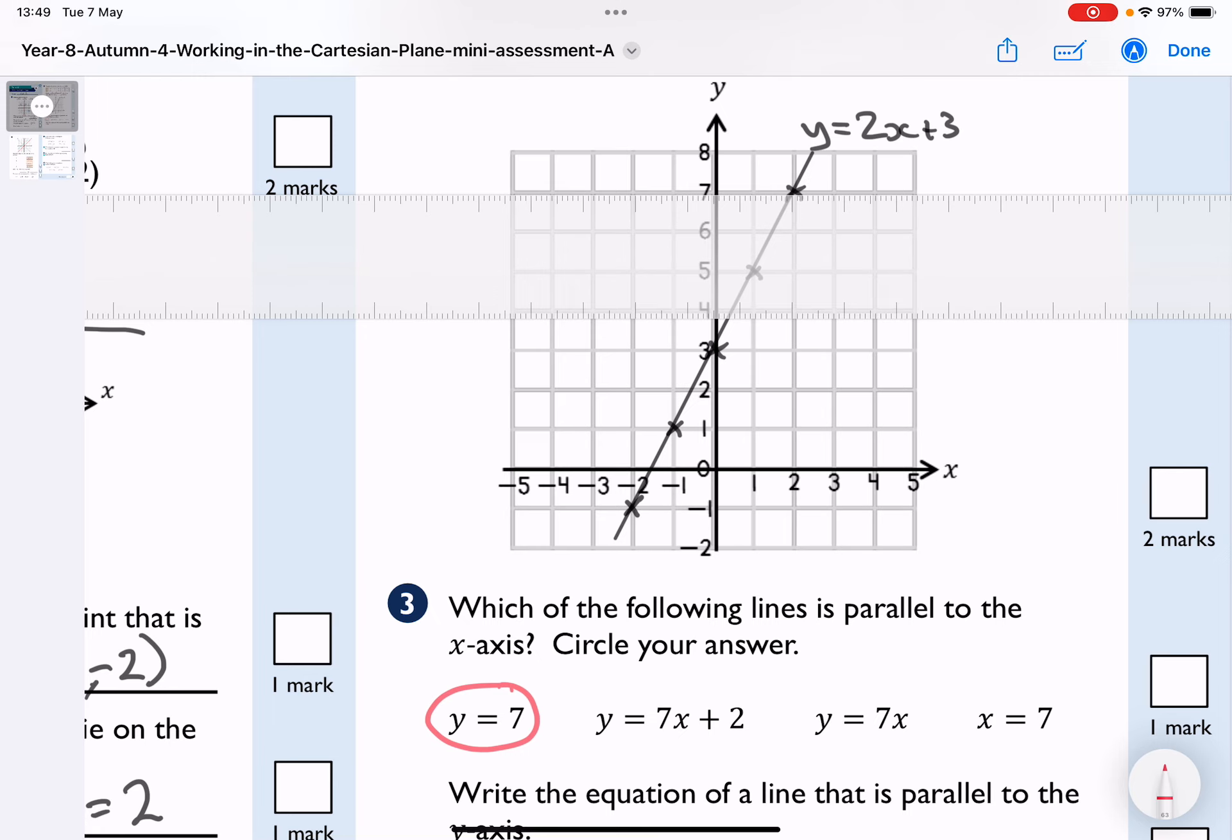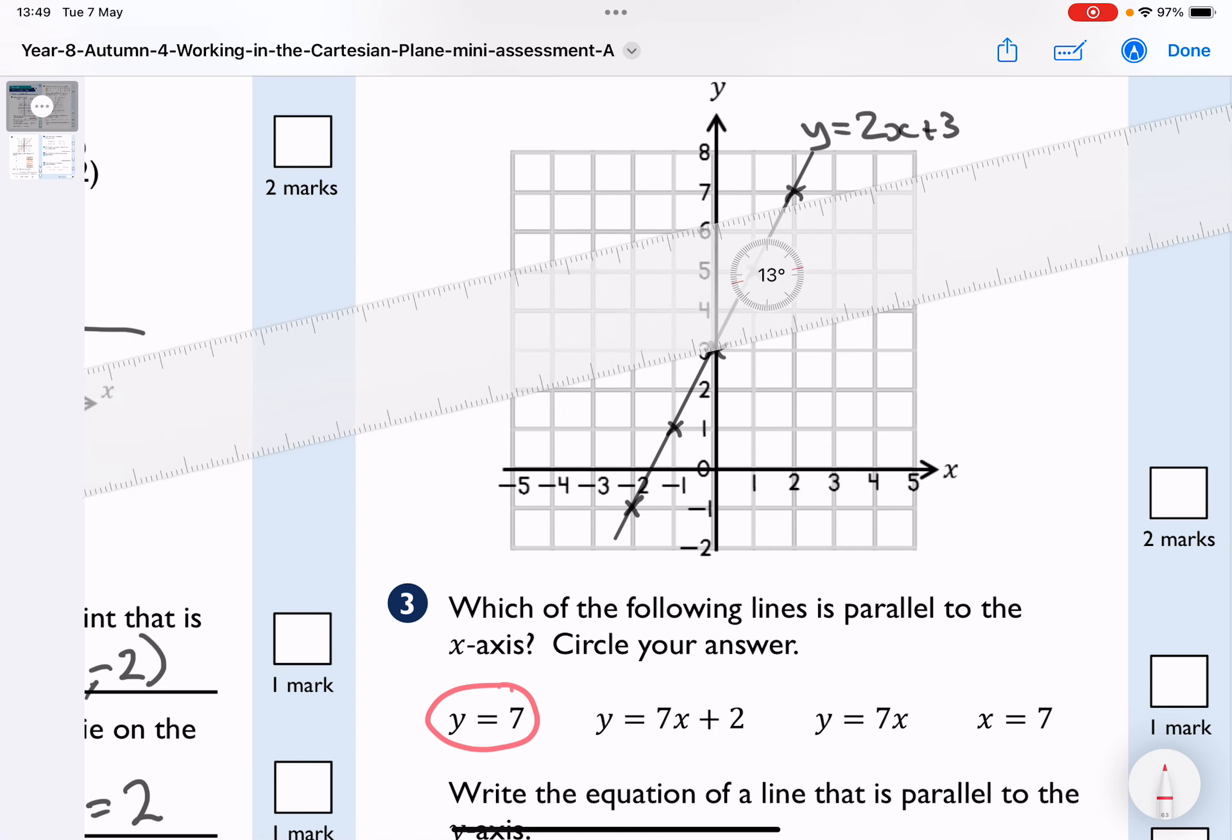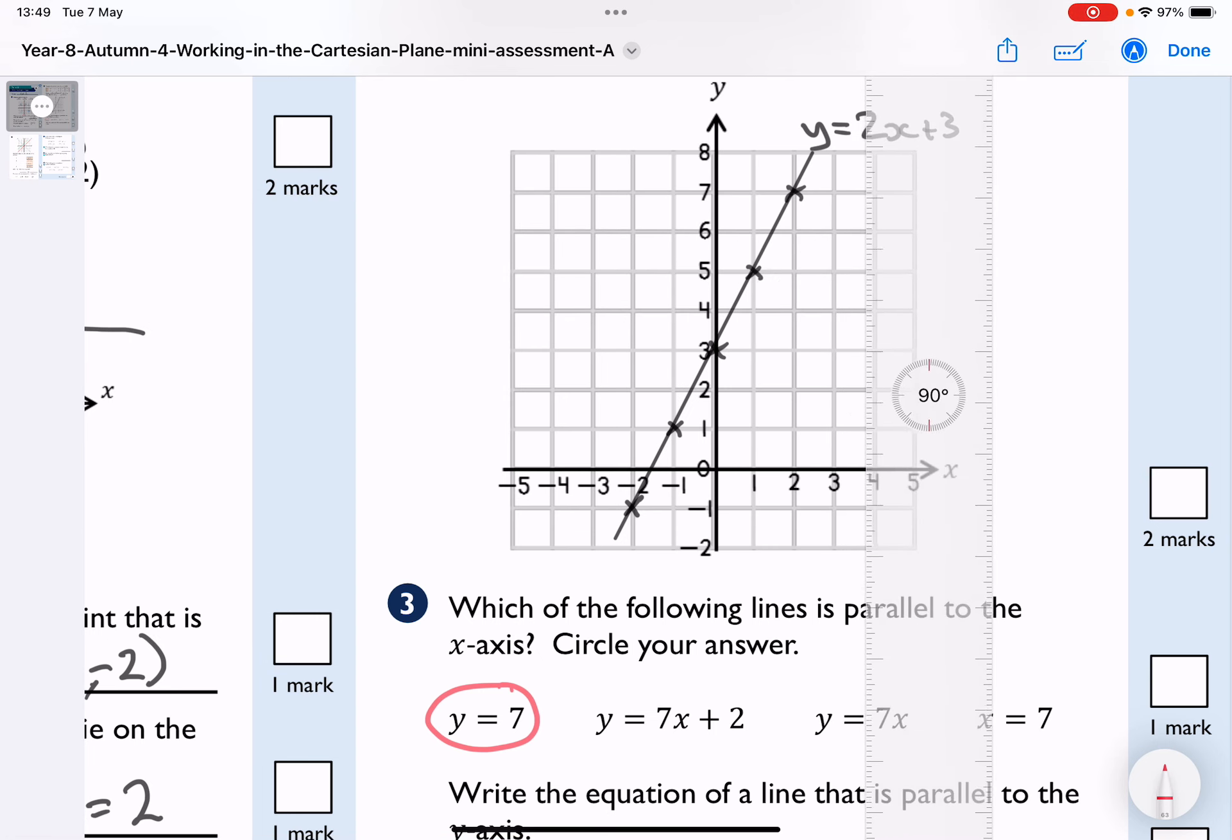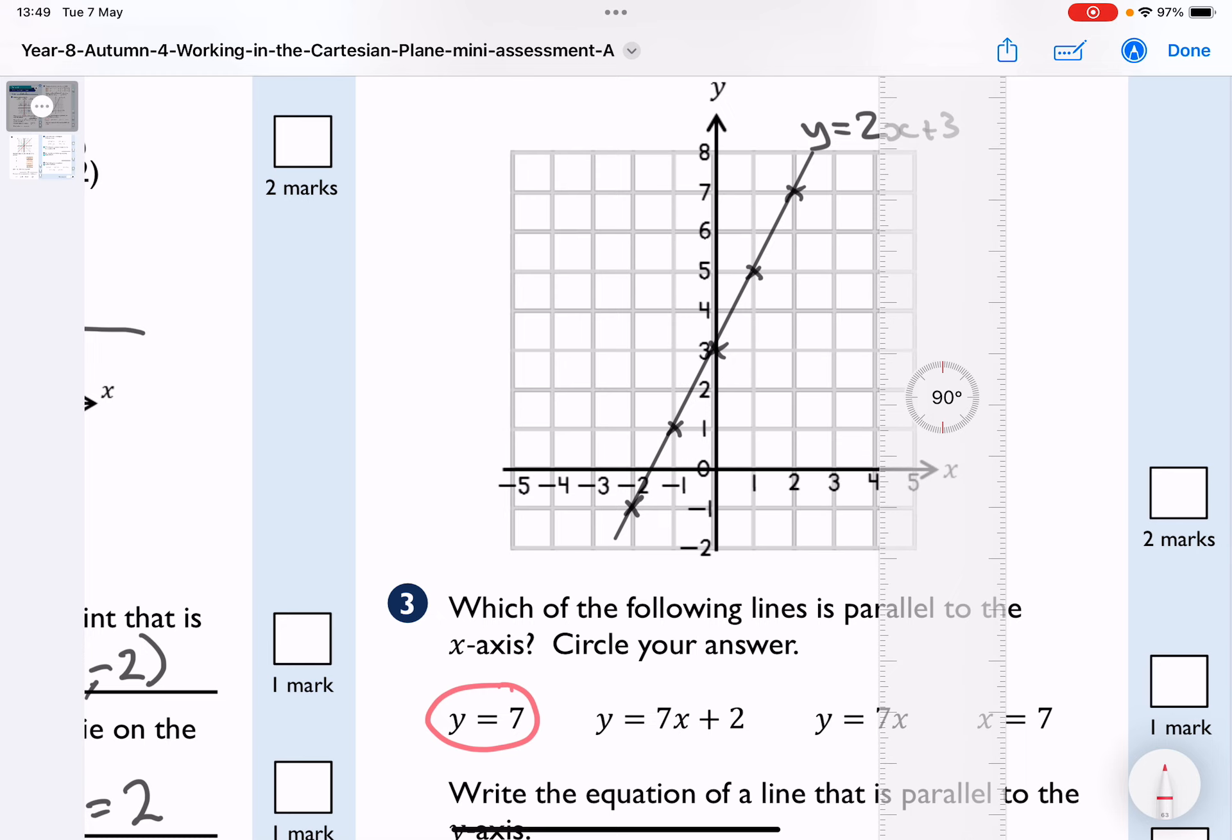7x plus 2 certainly isn't. y equals 7x isn't. And x equals 7 is actually where the line is going parallel to the y-axis.